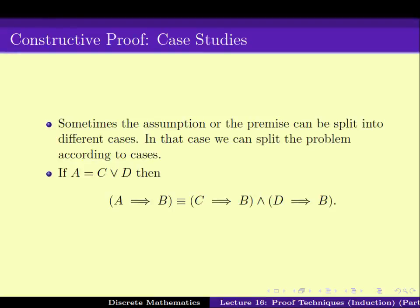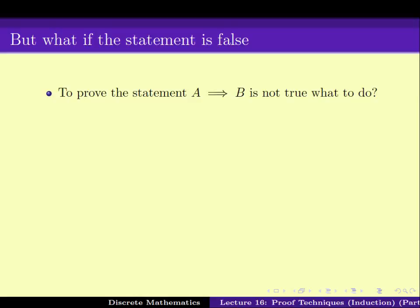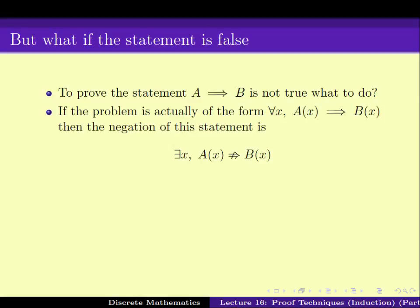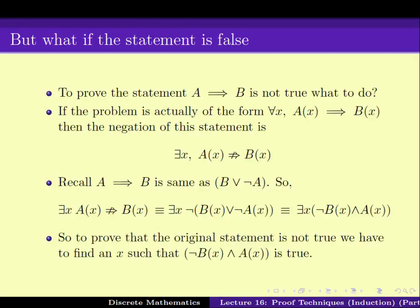We also thought about two ways of looking at the problem differently: namely proof by contradiction and proof by contrapositiveness. In one case, instead of proving A implies B, we end up proving that not-B and A is false. In the other case, we prove not-B implies not-A. For certain cases, particularly when B is of the form C OR D, the second technique — proof by contrapositiveness — helps. We also saw how one can disprove a statement: particularly if a statement is of the form 'for all x, A implies B,' one can disprove it by demonstrating an x for which A holds but B doesn't hold. This is called proof by counterexample.